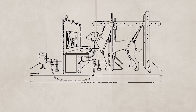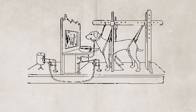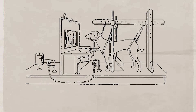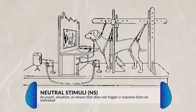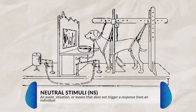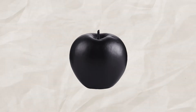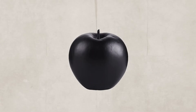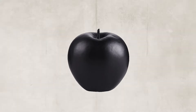Ivan Pavlov wanted to see if the dog would associate the food with other stimuli, so he isolated the dog in a room to eliminate other variables and stimuli. He put a tube in the dog's cheek to collect saliva and exposed the dog to different neutral stimuli, which are stimuli that elicit no response from a subject. For example, this apple probably does not elicit any response from you. This is a neutral stimulus.